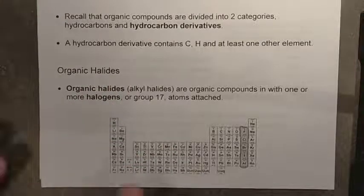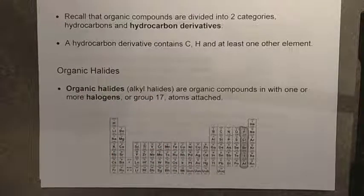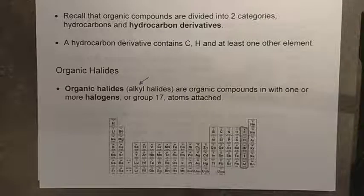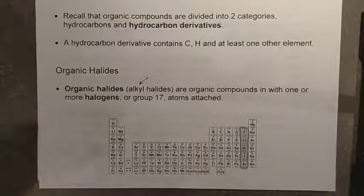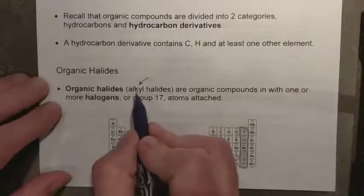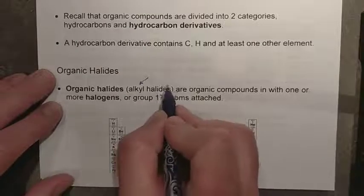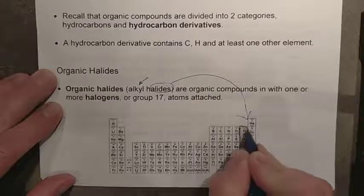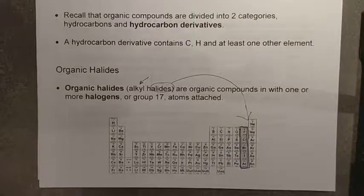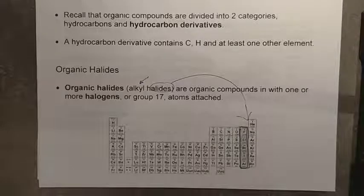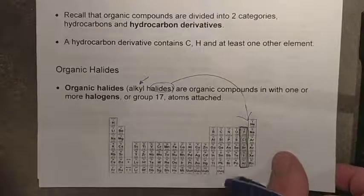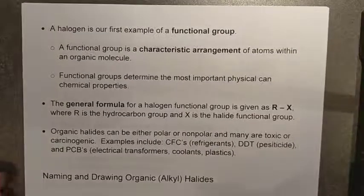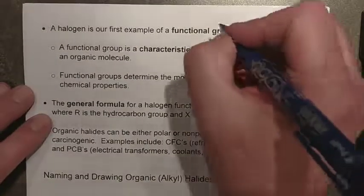The organic halides are sometimes referred to as the alkyl halides. The reason we call them an alkyl group is because your halogens can only form one bond, much like your CH₃ groupings with the alkyl branches — your methyl, ethyl, and propyl groups — so they can only really be attachments onto the parent chain. The halides are just another way of referring to the halogens in group 17 or 7A: fluorine, chlorine, bromine, iodine, and astatine. A halogen is our first example of what is known as a functional group.